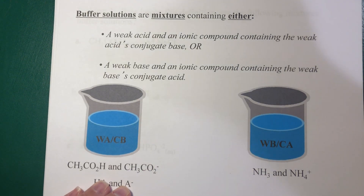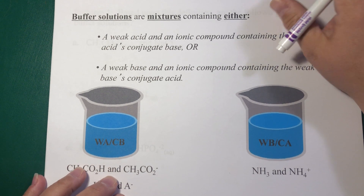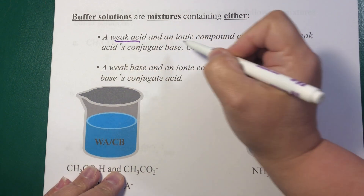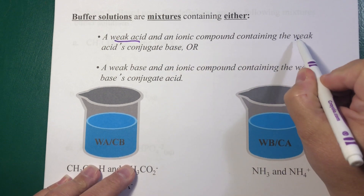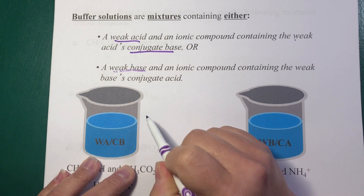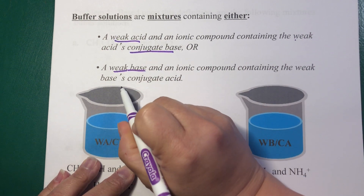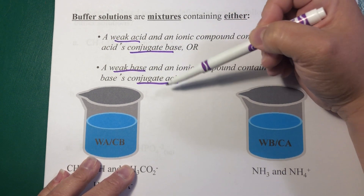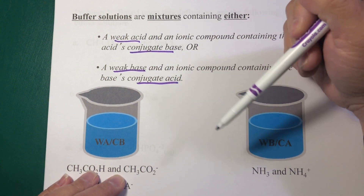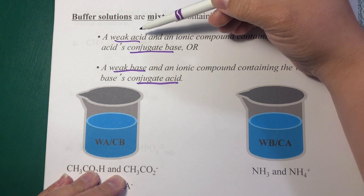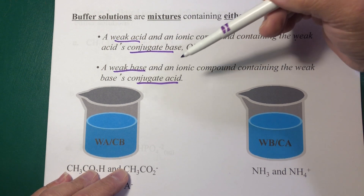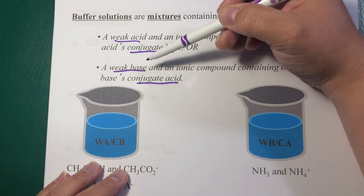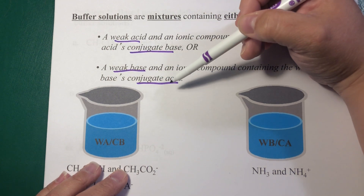So what is a buffer, and what makes it resist those changes in pH? A buffer is a mixture that either has a weak acid and an ionic compound that has its conjugate base, or a weak base and an ionic compound that contains the weak base's conjugate acid. So it has a weak acid/conjugate base pair, or a weak base/conjugate acid pair. For the purposes of explanation, I usually refer to the weak acid and conjugate base pair, but this same idea applies equally to a weak base and its conjugate acid.